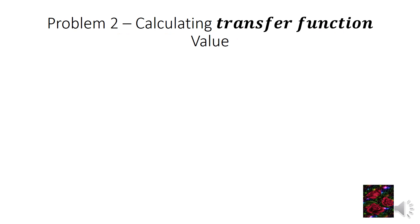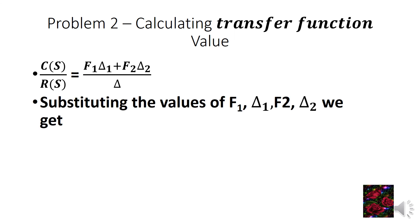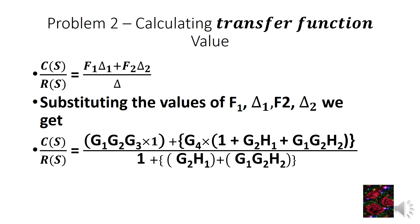Calculating transfer function C(s)/R(s): C(s)/R(s) equals (F1·delta1 + F2·delta2) divided by delta. Substituting values: C(s)/R(s) equals (G1·G2·G3 × 1 + G4 × (1 + G2·H1 + G1·G2·H2)) all divided by (1 + G2·H1 + G1·G2·H2). This is the required transfer function C(s)/R(s) for Problem 2.